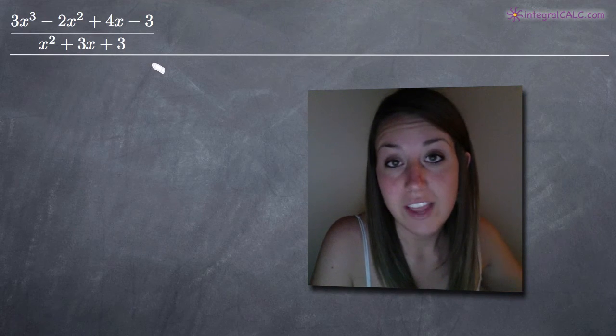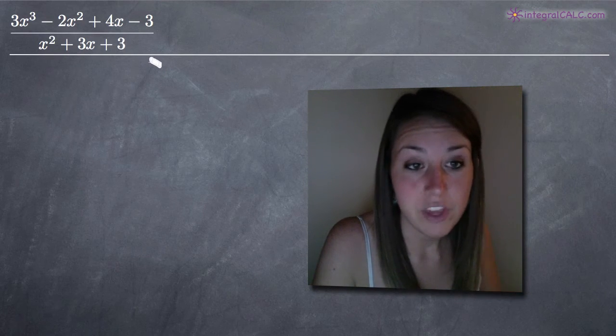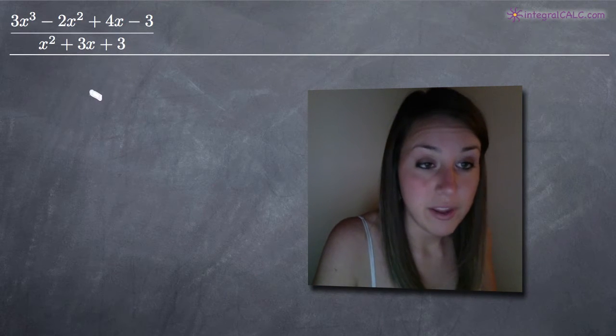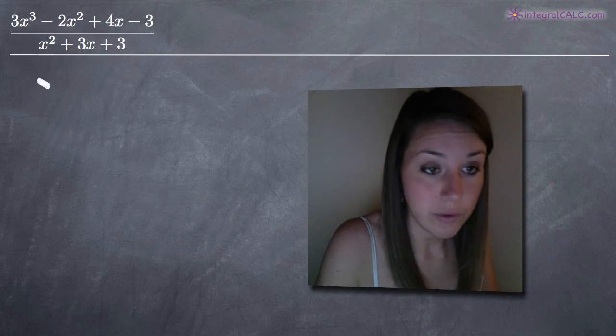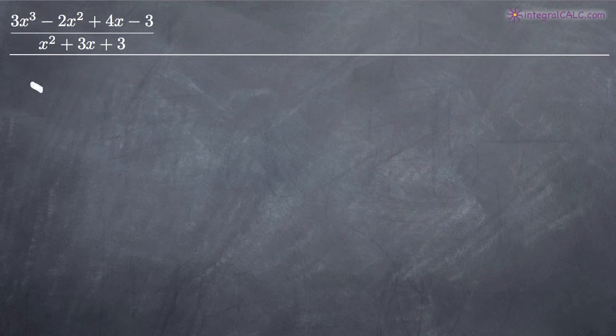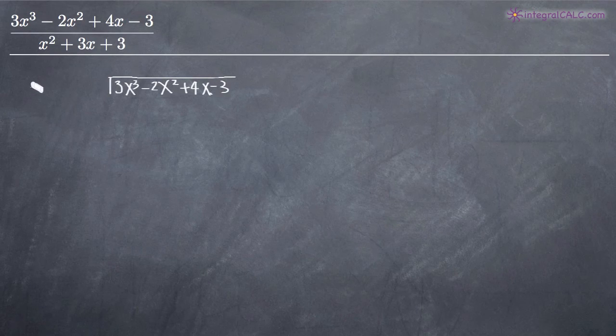This is no different than long division from elementary school, except we're dividing polynomials. First, remember the long division format. We put the numerator inside: 3x³ - 2x² + 4x - 3, and the denominator on the outside: x² + 3x + 3.